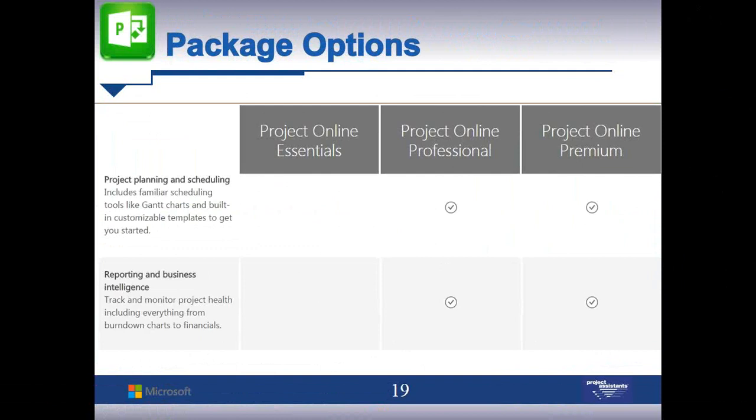Project planning and scheduling — including familiar scheduling tools like Gantt charts and building customizable templates — is where you start seeing differences. You can do some planning and scheduling in the browser, but the full scheduling capabilities come with Project Online Professional or Premium. Think of Essentials as the team member tier — they receive assignments and can log in, but they can't build the schedule. Project Online Professional and Premium allow you to actually build and create schedules.